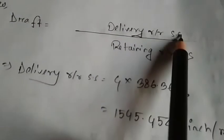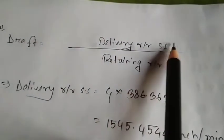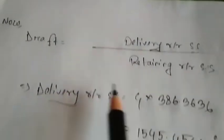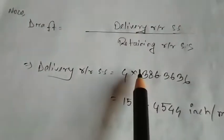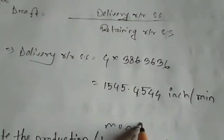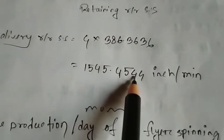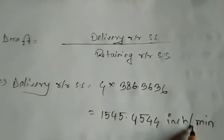So draft is equal, delivery count by retaining roller. So draft is equal delivery roller surface speed delivery retaining roller. Delivery roller surface speed, 4 times 386.3636, so that is 1545.44 inch per minute.